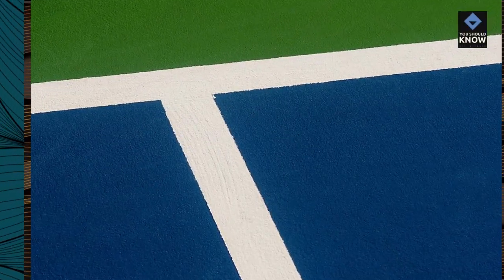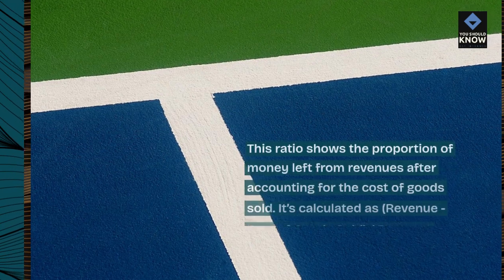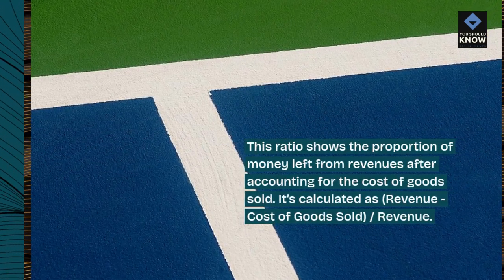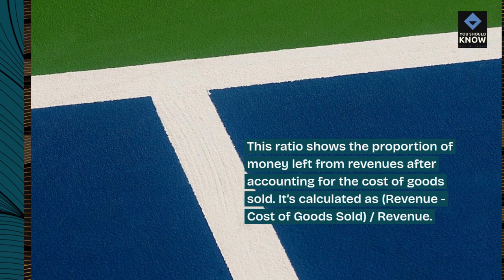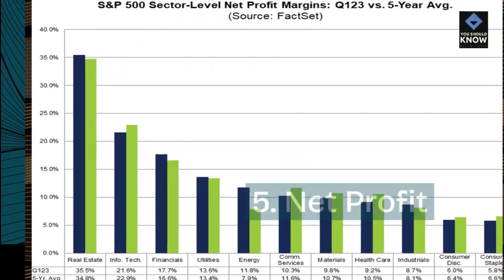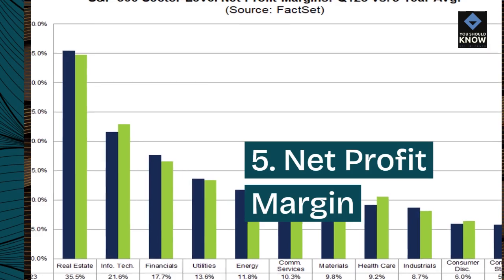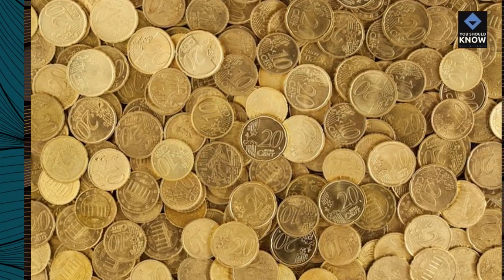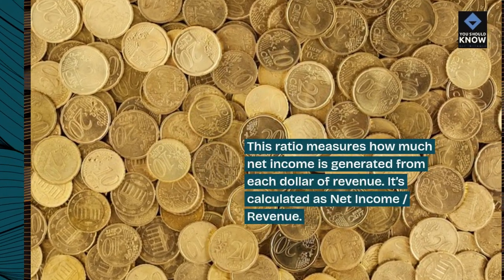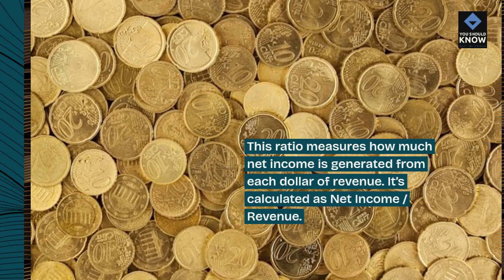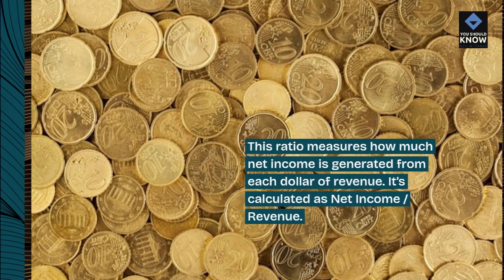4. Gross profit margin. This ratio shows the proportion of money left from revenues after accounting for the cost of goods sold. It's calculated as revenue minus cost of goods sold. 5. Net profit margin. This ratio measures how much net income is generated from each dollar of revenue. It's calculated as net income divided by revenue.